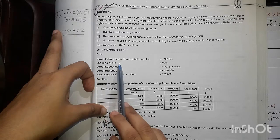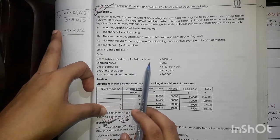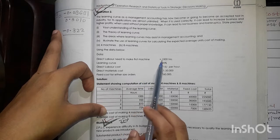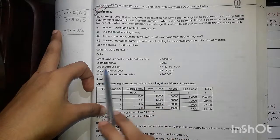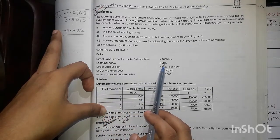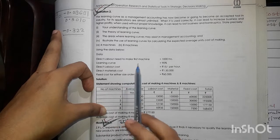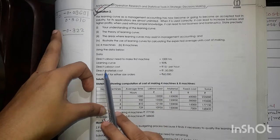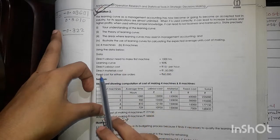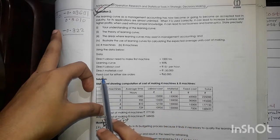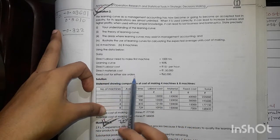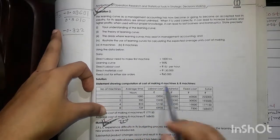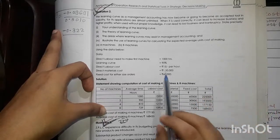This is A, then learning curve rate 90%. In the earlier question, they have given 80%. Now they are giving 90%. So this is A and this is rate. Direct labor cost that is Rs. 15 per hour. Direct material cost 150,000. Fixed cost for either size of orders. So fixed cost always remains same in the amount. So this is same for any kind of production.